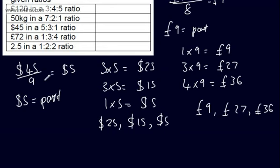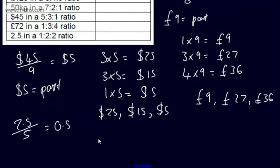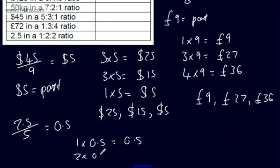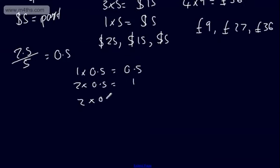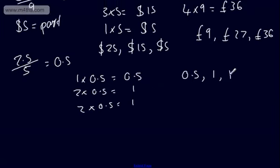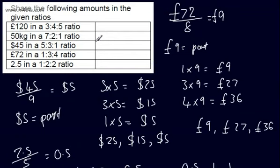2.5 in a 1 to 2 to 2 ratio: 5 total parts. 2.5 divided by 5 means each part is going to be 0.5. So we do 1 times 0.5, which is 0.5; 2 times 0.5, which is 1; and another 2 times 0.5, which is 1. So we could write it now as 0.5, 1, and 1. So that's sharing in a ratio — if you're asked to share in a ratio, that's all we need to do.